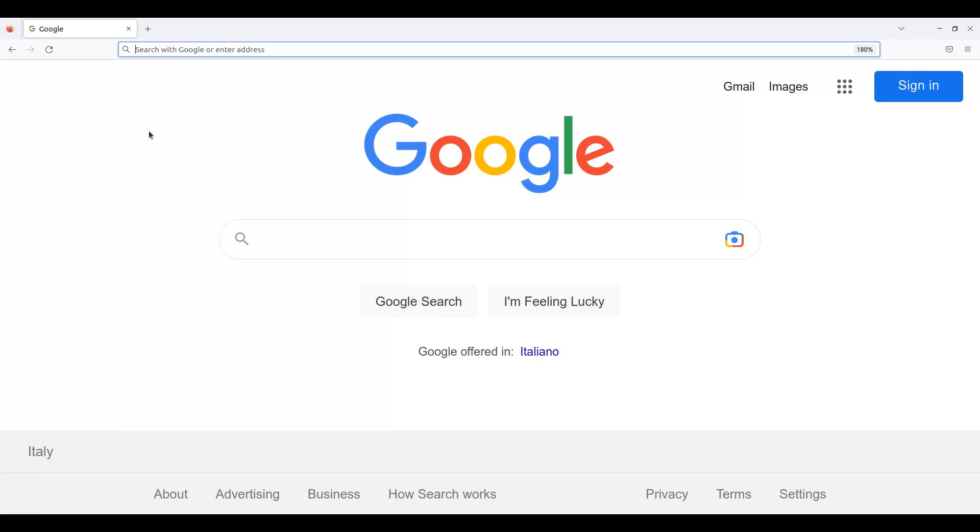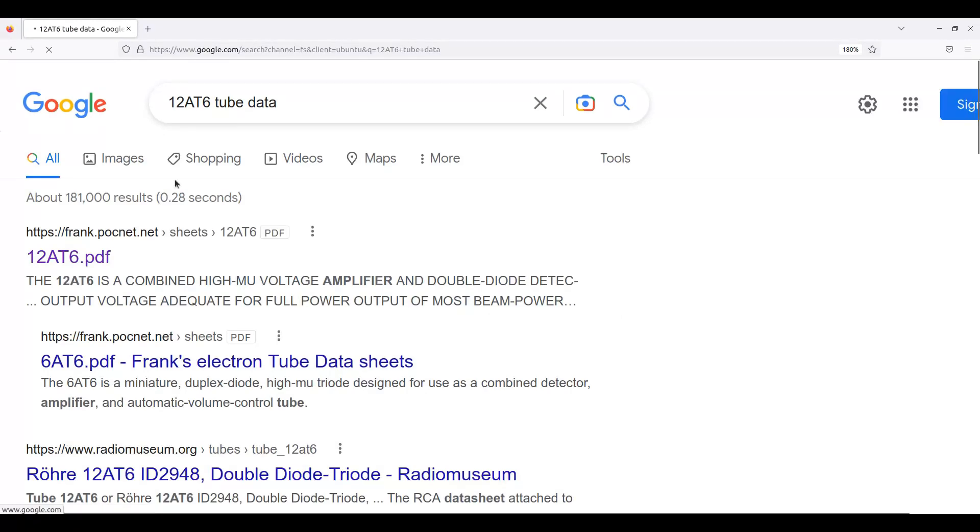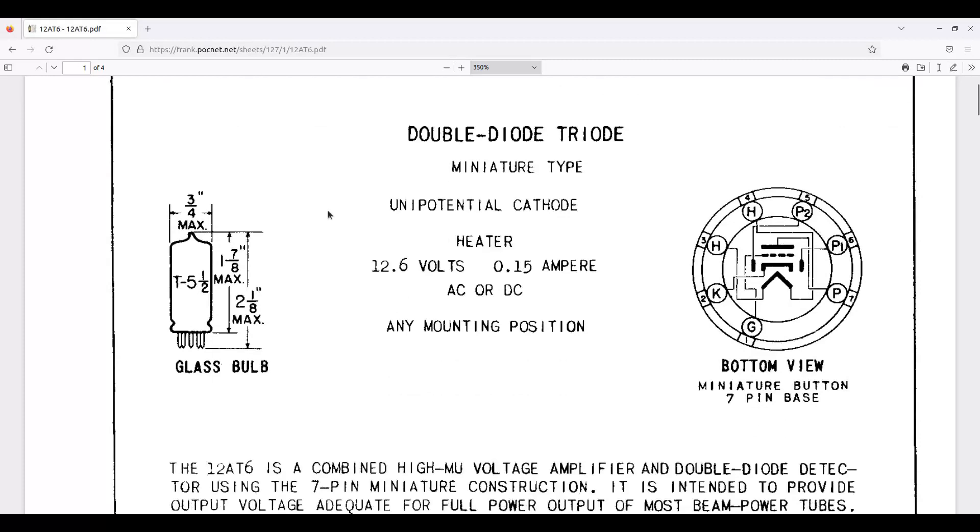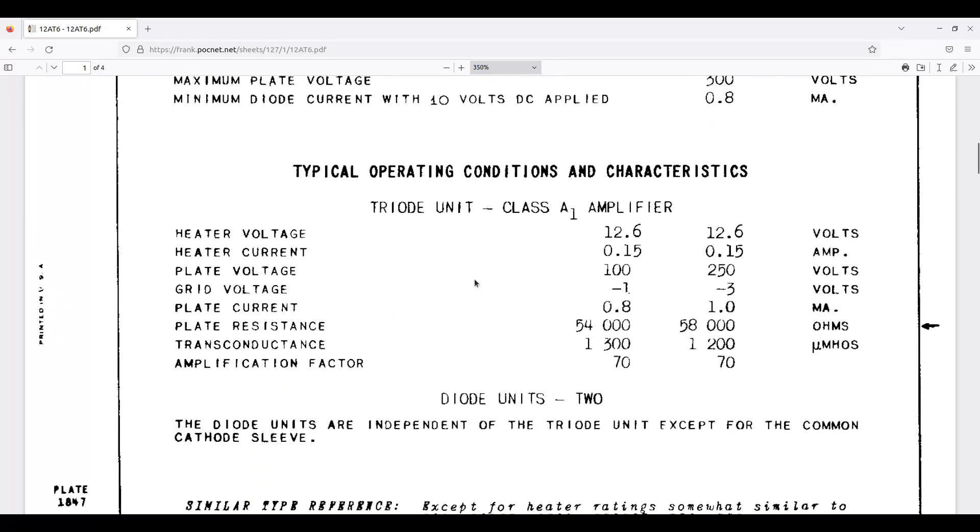As an example, the triode section of a 12VT6 is to be tested. The original documentation of this tube shows that for a plate voltage of 100 volts, the typical grid voltage configuration should be minus one volt, while the plate current would not exceed one milliamp.